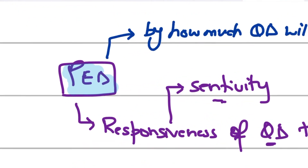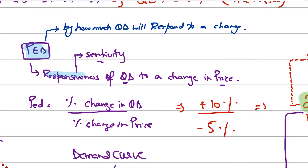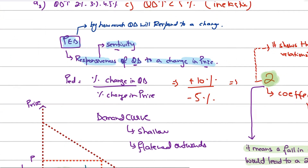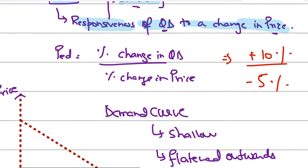Price elasticity of demand (PED) is the responsiveness — the sensitivity — of quantity demanded to a change in price. It is calculated by the formula: percentage change in quantity demanded divided by percentage change in price.